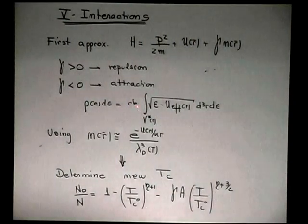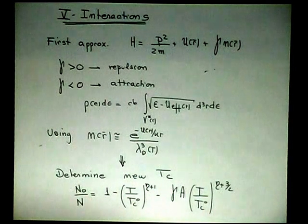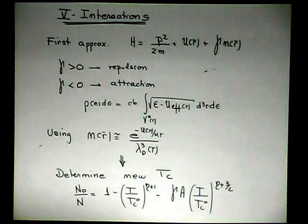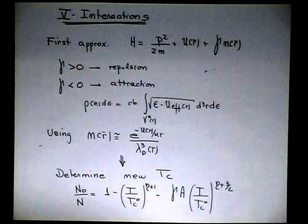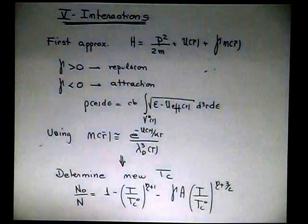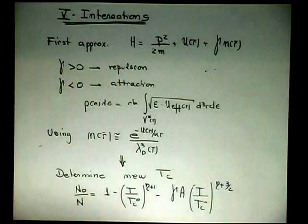The correction on the critical temperature or in the order parameter here on the population of the ground state depends if it is attractive or repulsive depletion. If it is attractive, it's like in this approximation particles get together, the effect is like increasing the density in this system.